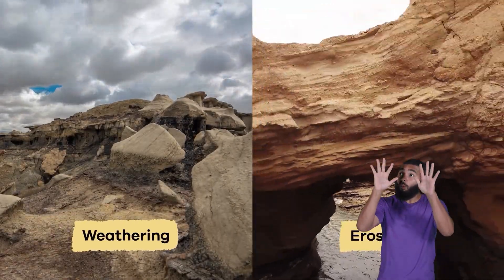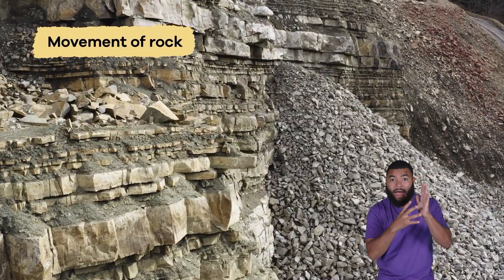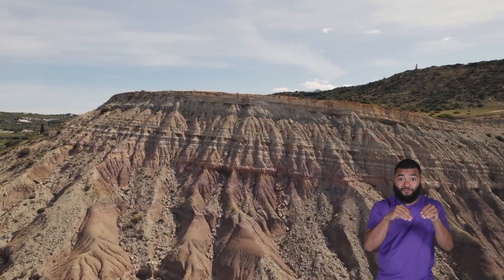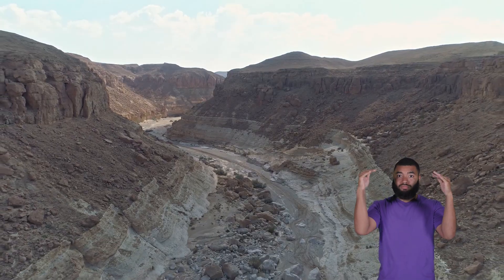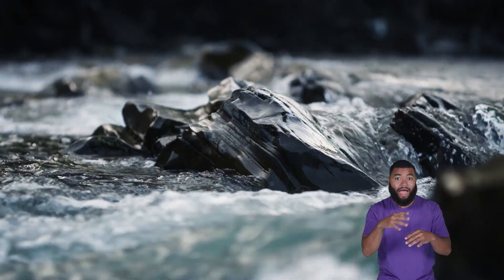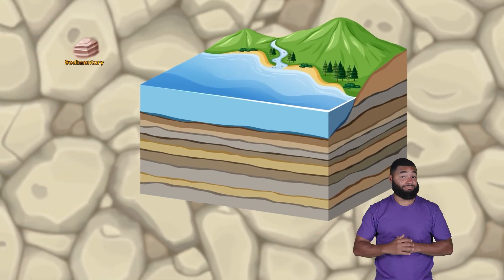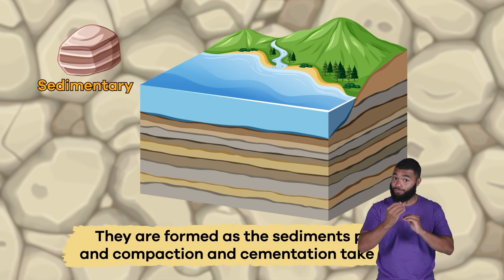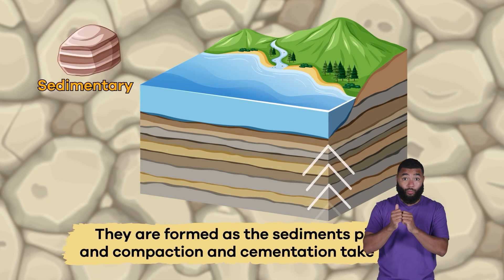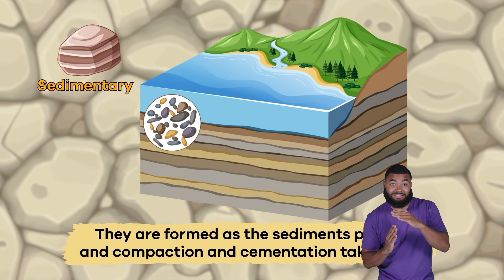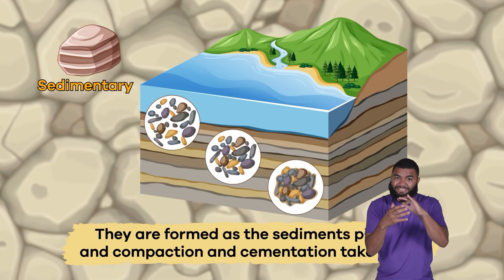Step 3: Weathering, erosion, and movement of rock on the Earth's surface carry sediments of rocks to low-lying places and bodies of water. Step 4: Sedimentary rocks are formed as the sediments pile up and compaction and cementation take place.